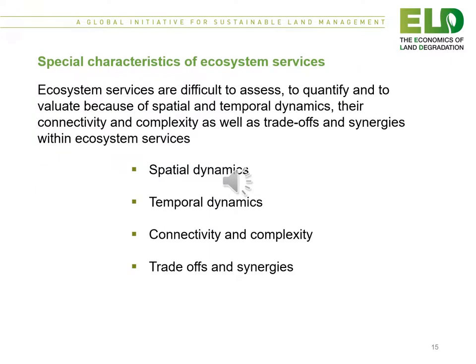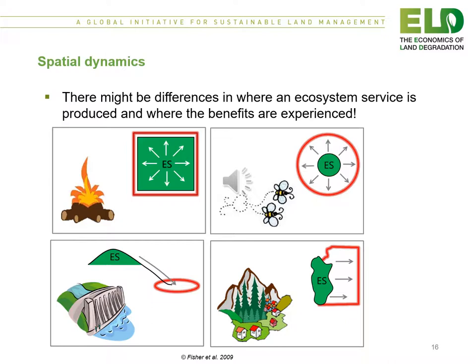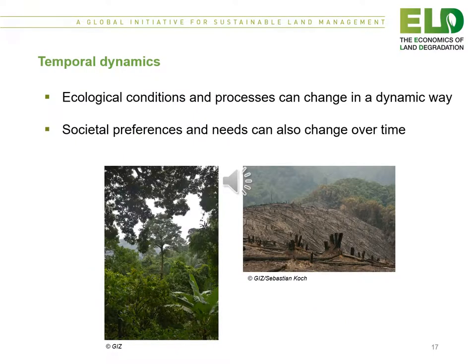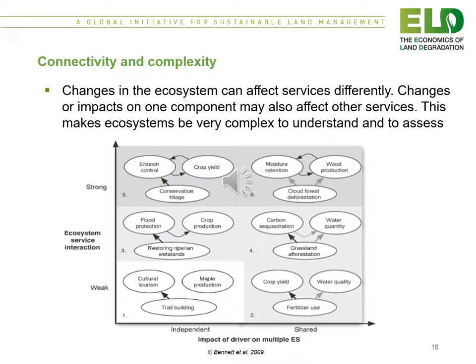There are some specific challenges to characterize ecosystem services. Sometimes ecosystem services are difficult to assess, to quantify, and to evaluate because of spatial and temporal dynamics, their connectivity and complexity, as well as trade-offs and synergies within ecosystem services. With respect to spatial dynamics, there might be differences in where an ecosystem service is produced and where the benefits are experienced. With respect to temporal dynamics, ecological conditions and processes can change dynamically, and societal preferences and needs can also change over time. In terms of connectivity and complexity, changes in the ecosystem can affect services differently, and changes or impacts on one component may also affect other services, making ecosystems very complex and difficult to understand and assess.